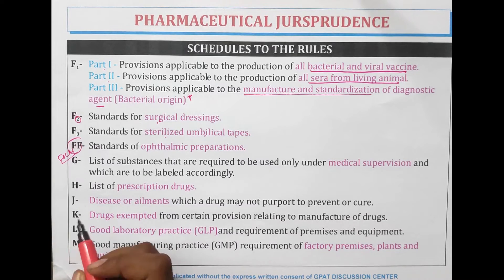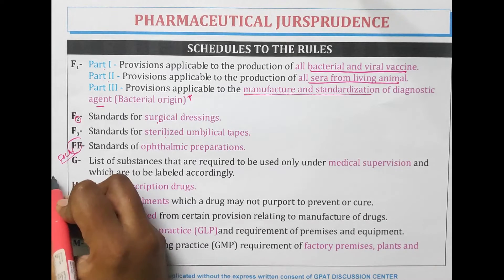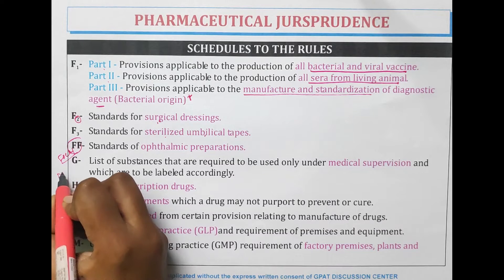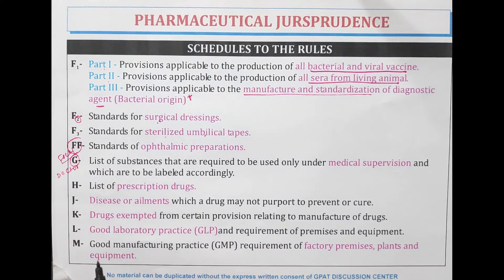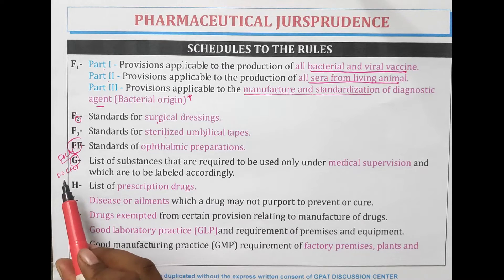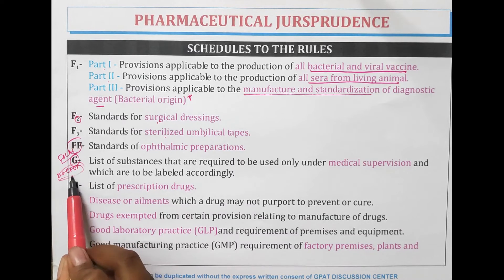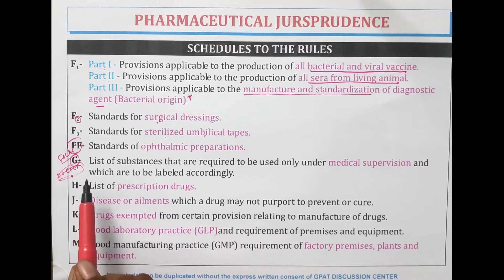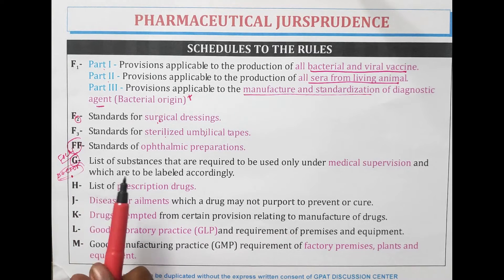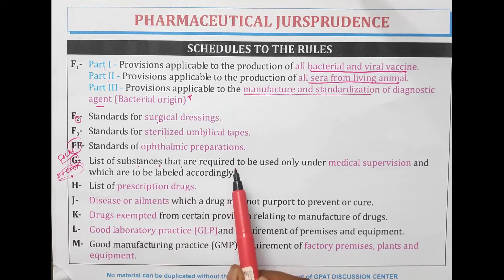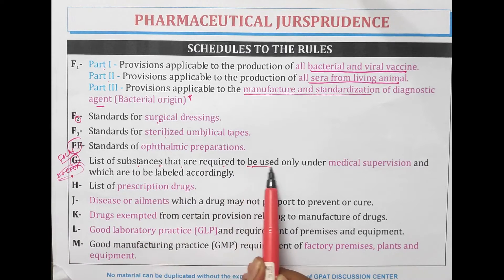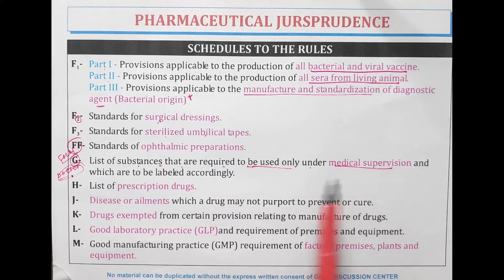Schedule G — you could remember it as G for guardian. These are things that we can only get from a Doctor G, or which should be taken in front of a guardian. Schedule G is the list of substances that are required to be used only under medical supervision and which are to be labeled accordingly.